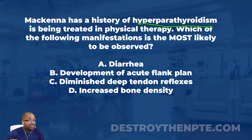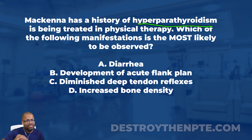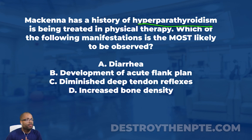The stem of the question asks which of the following manifestations is most likely to be observed. For those on the podcast, the answers are: A — diarrhea, B — development of acute flank pain, C — diminished deep tendon reflexes or DTRs, and D — increased bone density. I want to knock these down one by one. The patient with hyperparathyroidism is most likely experiencing hypercalcemia.